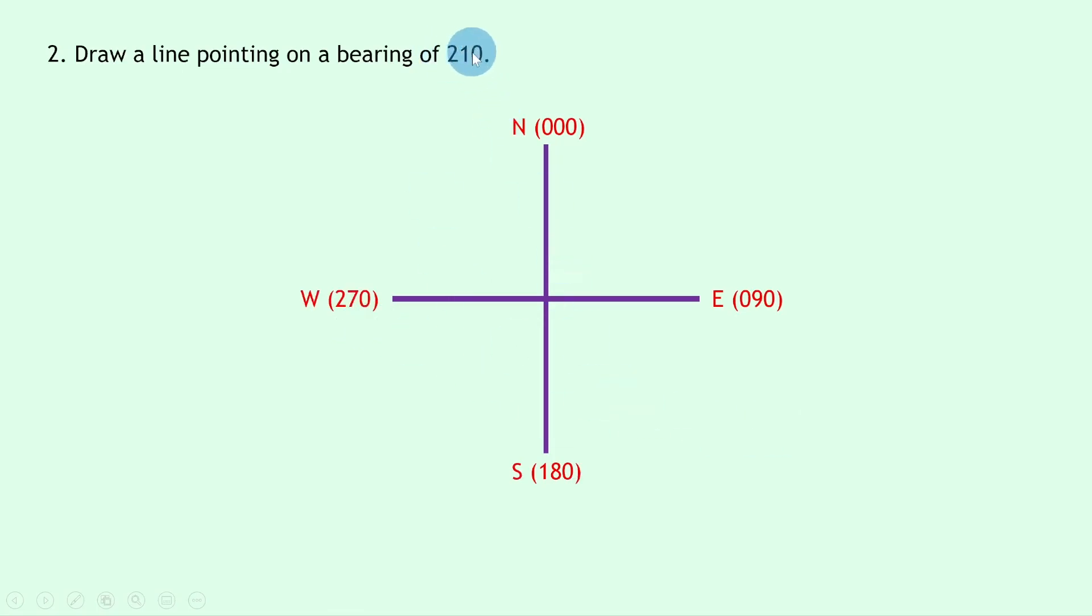If we think about this, a bearing of 210 must lie between 180 and 270, and 210 is 30 degrees greater than 180, so it must be 30 degrees away from south. There's our line, and that means our bearing all the way around to there is 210.